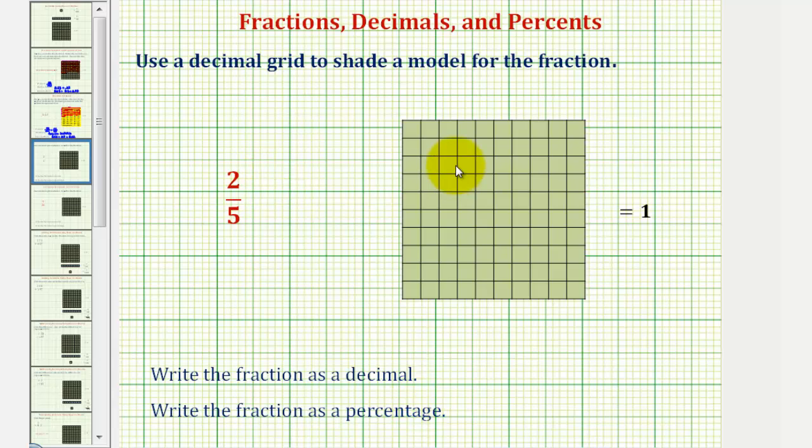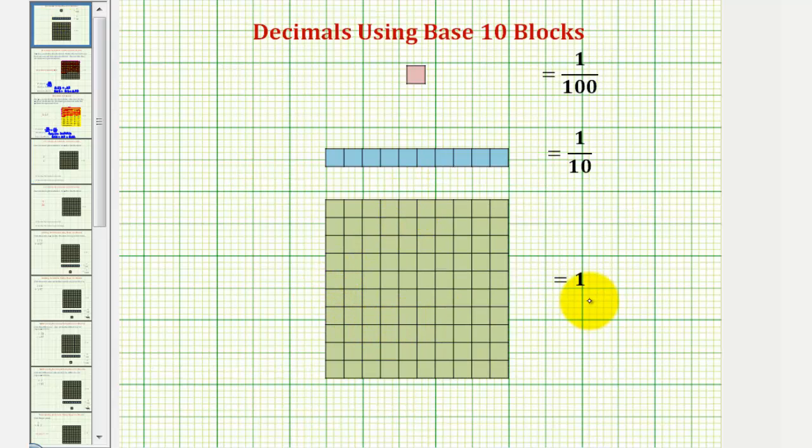Let's begin by defining our decimal grid. The ten by ten grid, often called a flat, equals one.